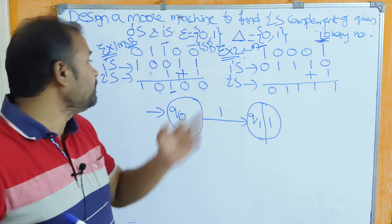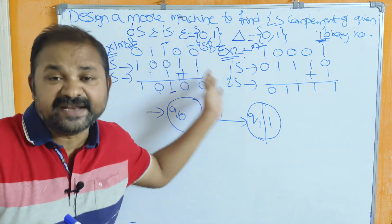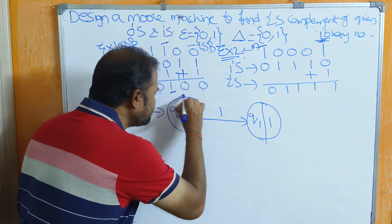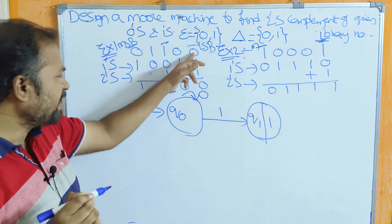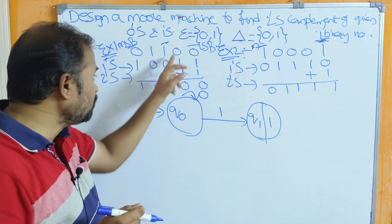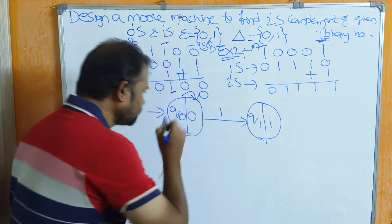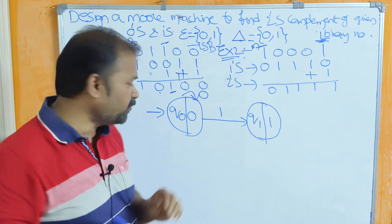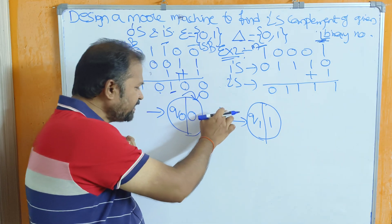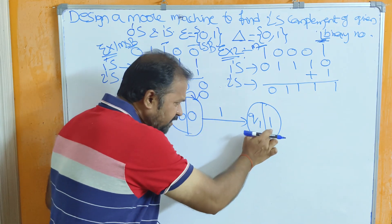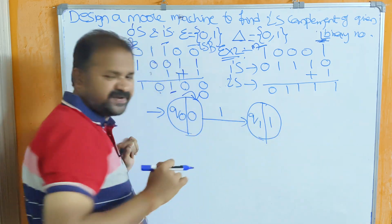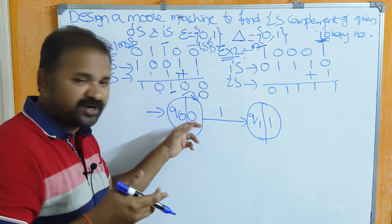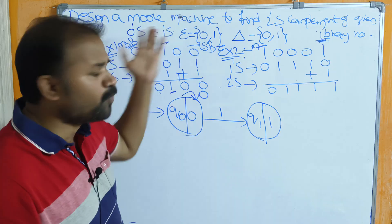Before this first 1 we may have any number of 0s, and we keep them the same. So we apply a self-loop on q0: if input is 0, the output is 0 and state stays q0. Up to the first 1, the output is the same — if input is 0, output is 0; if input is 1, output is 1.